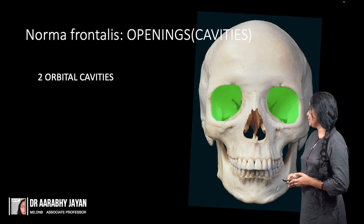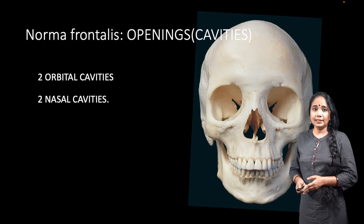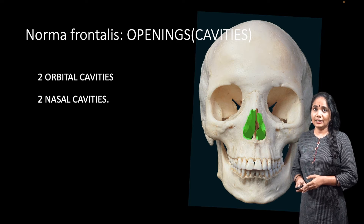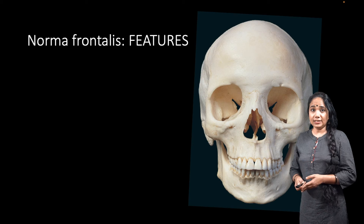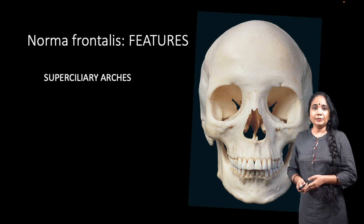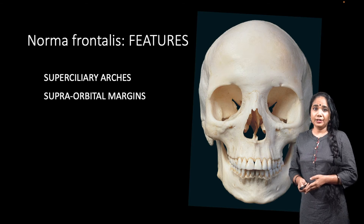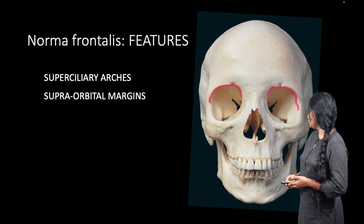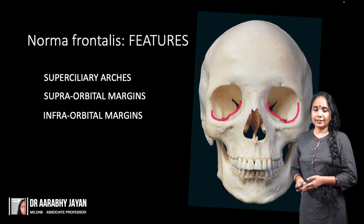The most obvious cavities that can be seen are the two orbital cavities. We also have two nasal cavities in the norma frontalis with the nasal septum in between. The superciliary arches represent the eyebrows in the living. We also have the two borders of the orbit — the supraorbital margins on top and the infraorbital margins below.